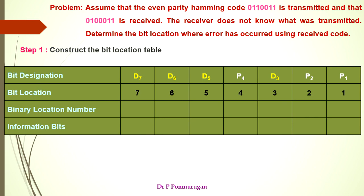The bit locations and the binary location numbers for the corresponding bit locations are assigned. The information bits received on the receiver side are 010011. This completes the bit location table.